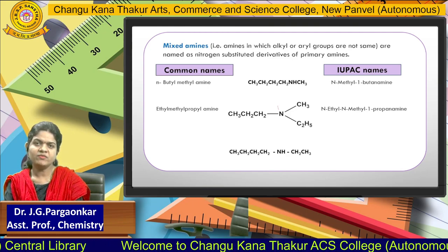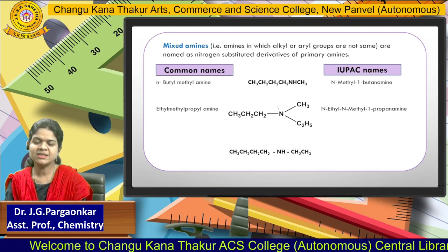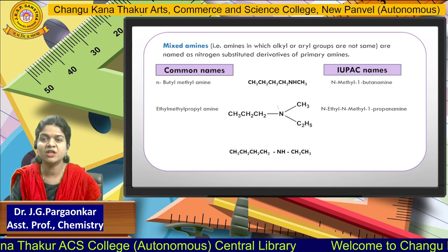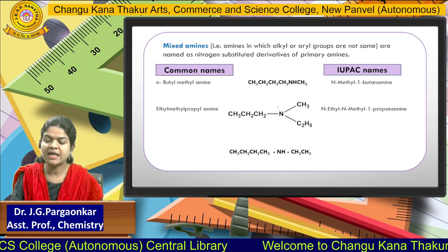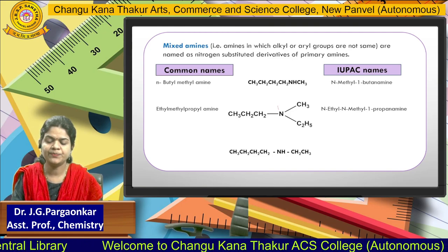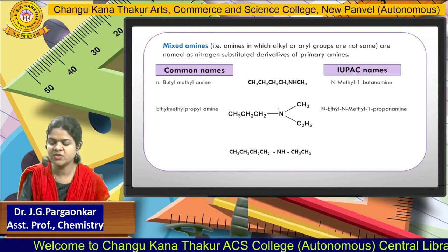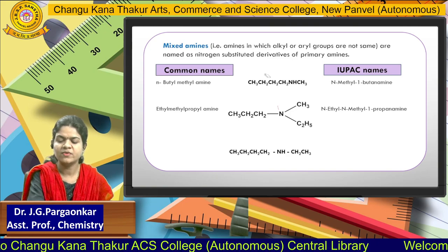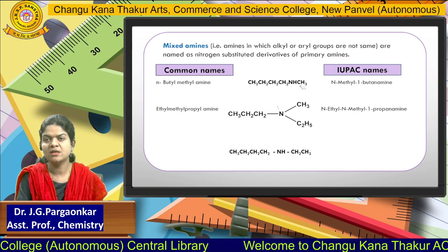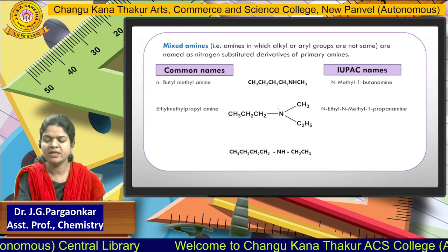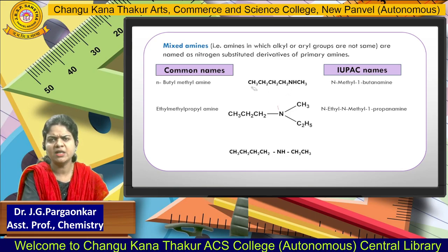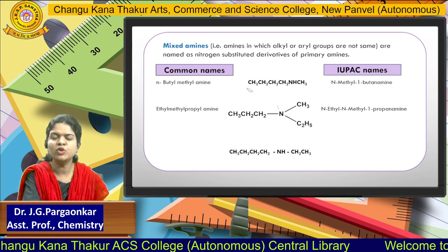On screen, we will see the mixed amines. Mixed amines means these are nothing but compounds where alkyl or aryl groups are different — not the same. These examples are the nitrogen-substituted derivatives of primary amines. In the first structure, at one position there is a methyl group and at the other side there are four carbon atoms, so methyl group and butyl group are present.